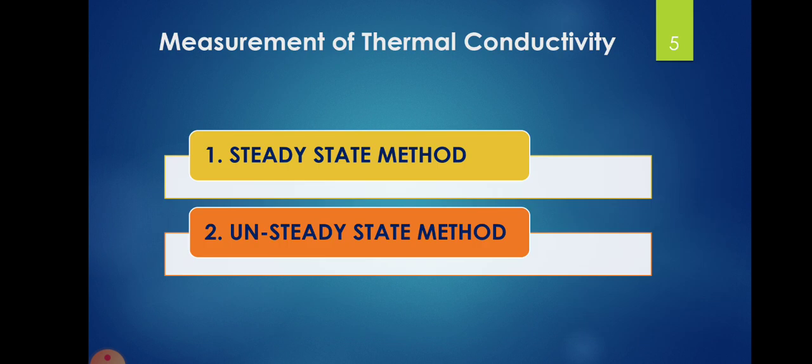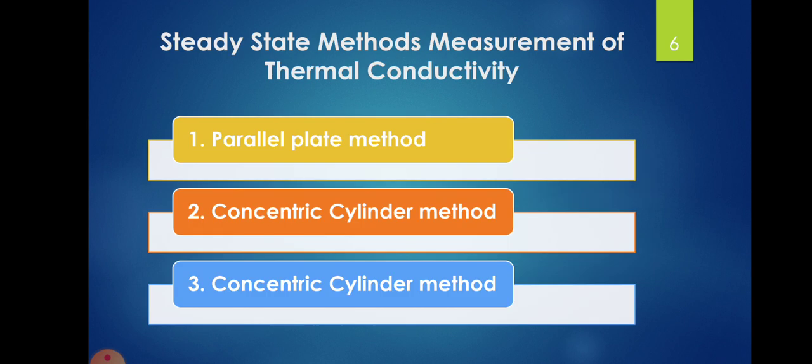Measurement of thermal conductivity is done by two methods: the steady state method and the unsteady state method. The steady state method is further classified into three types: the parallel plate method, the concentric cylinder method, and the concentric sphere method.